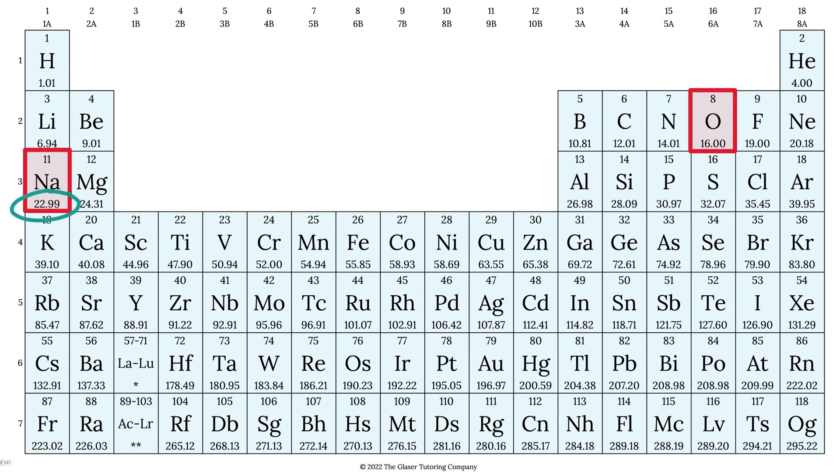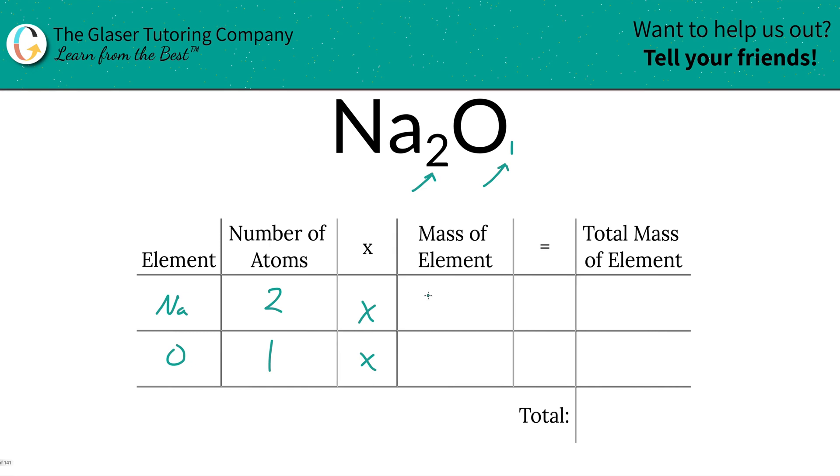Those masses are found on the periodic table, so you've got to take a look. 22.99 for sodium, 16 for oxygen, and that's what we're going to write down.